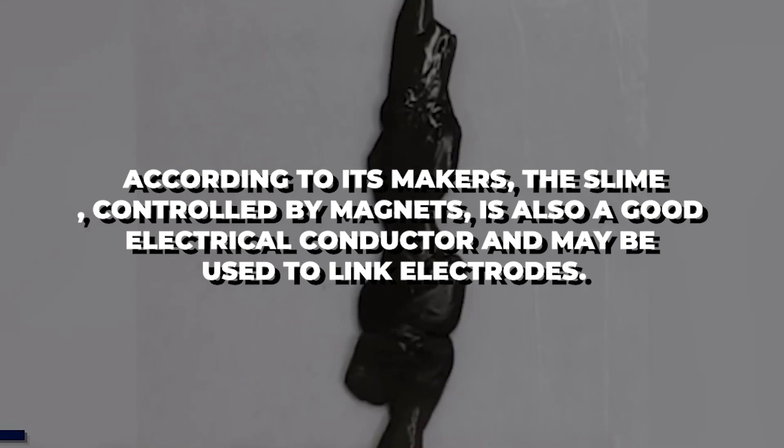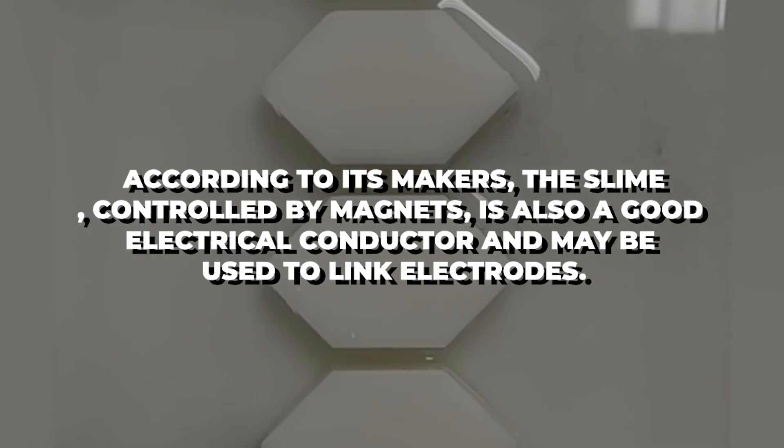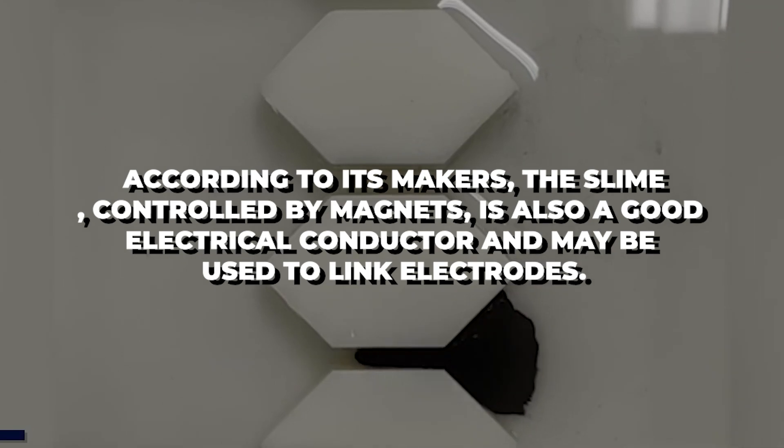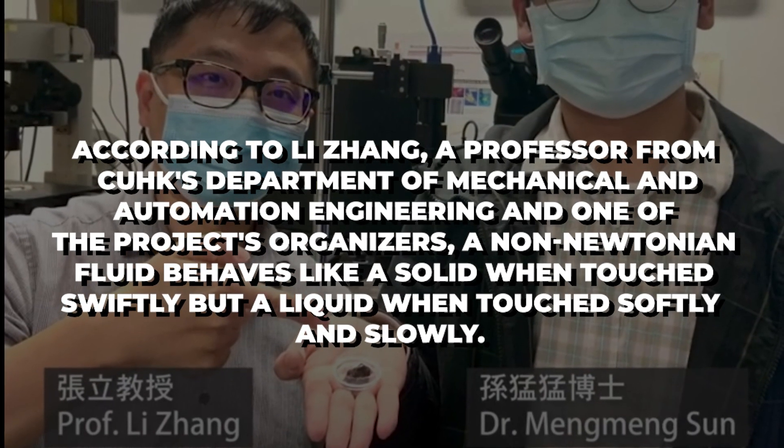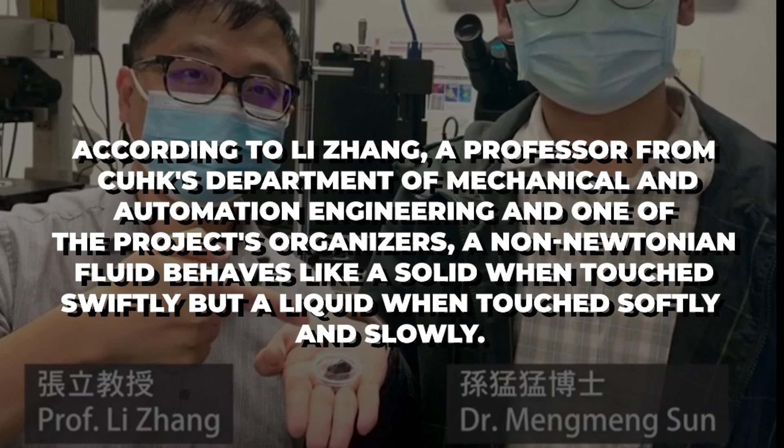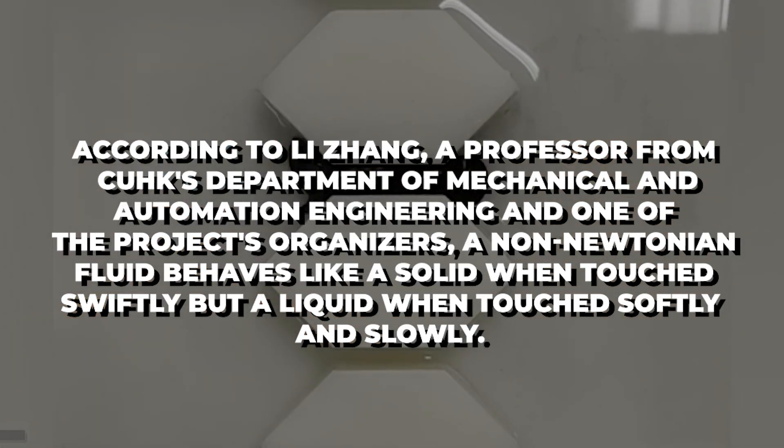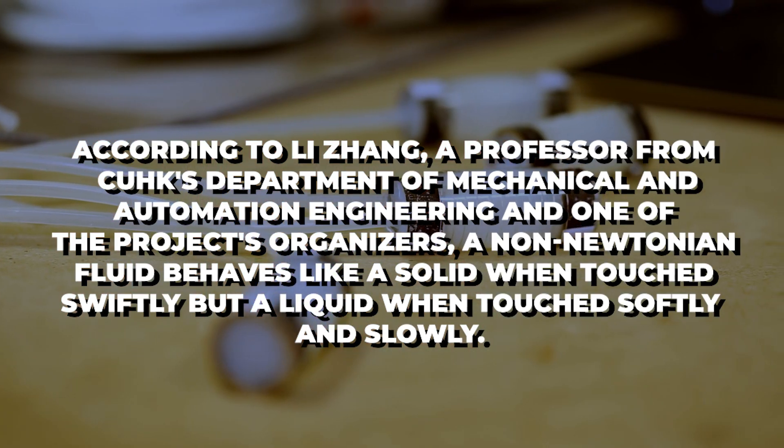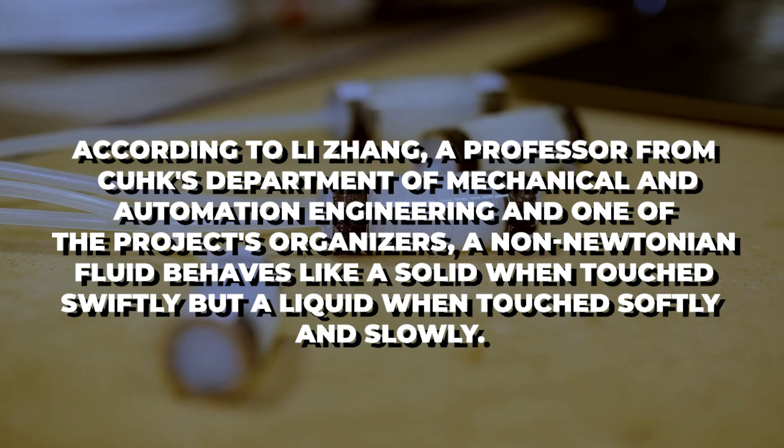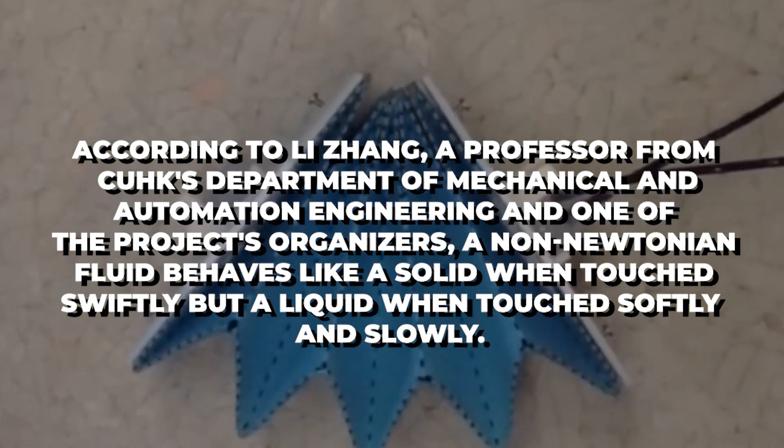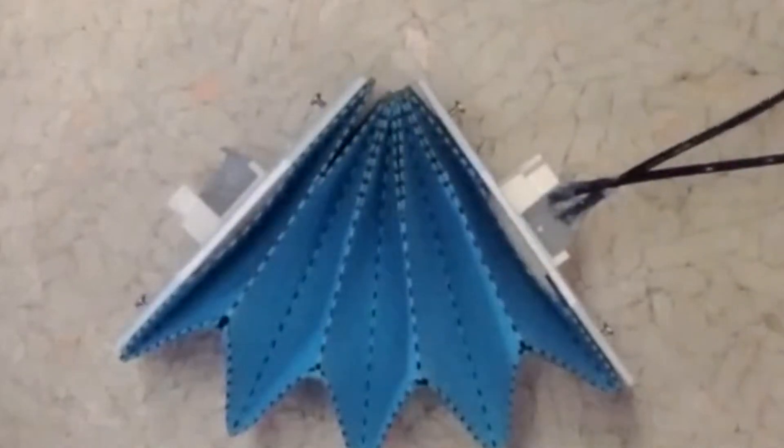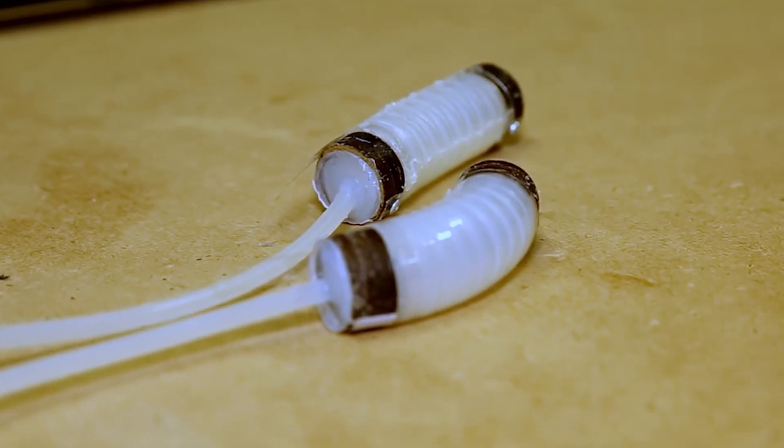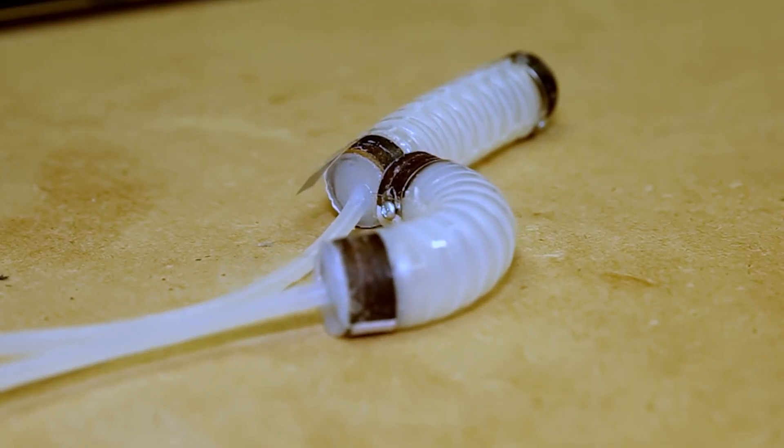According to its makers, the slime, controlled by magnets, is also a good electrical conductor and may be used to link electrodes. According to Lin Zhang, a professor from CUHK's Department of Medical and Automation Engineering and one of the project's organizers, a non-Newtonian fluid behaves like a solid when touched swiftly by a liquid when touched softly and slowly. This behavior allows the robot to be elastic and strong enough to wrap around objects like cables or ball bearings.